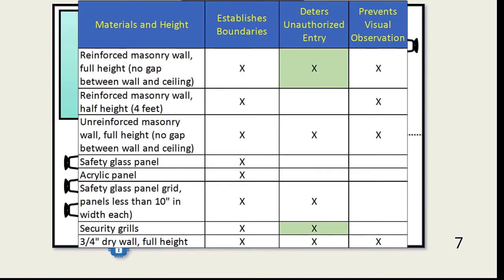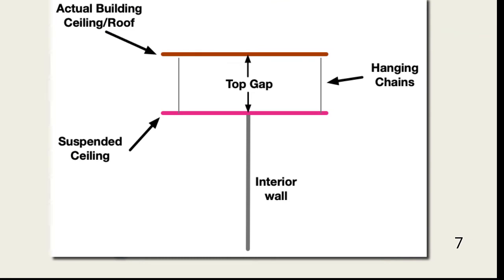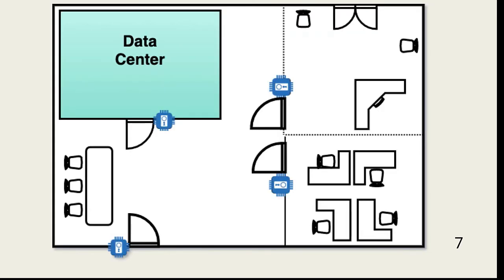As with exterior walls, wall material determines how easy it is to break through. This table is an example of the differences, and it also depicts how the height of walls affects how well the walls work. An important consideration is any top gap an intruder can pass over. For example, if the building has suspended ceilings, interior walls often only extend as high as the ceiling, leaving a gap between the top of the wall and the structure's actual ceiling or roof. Organizations must work with contractors to determine the appropriate materials based on risk.